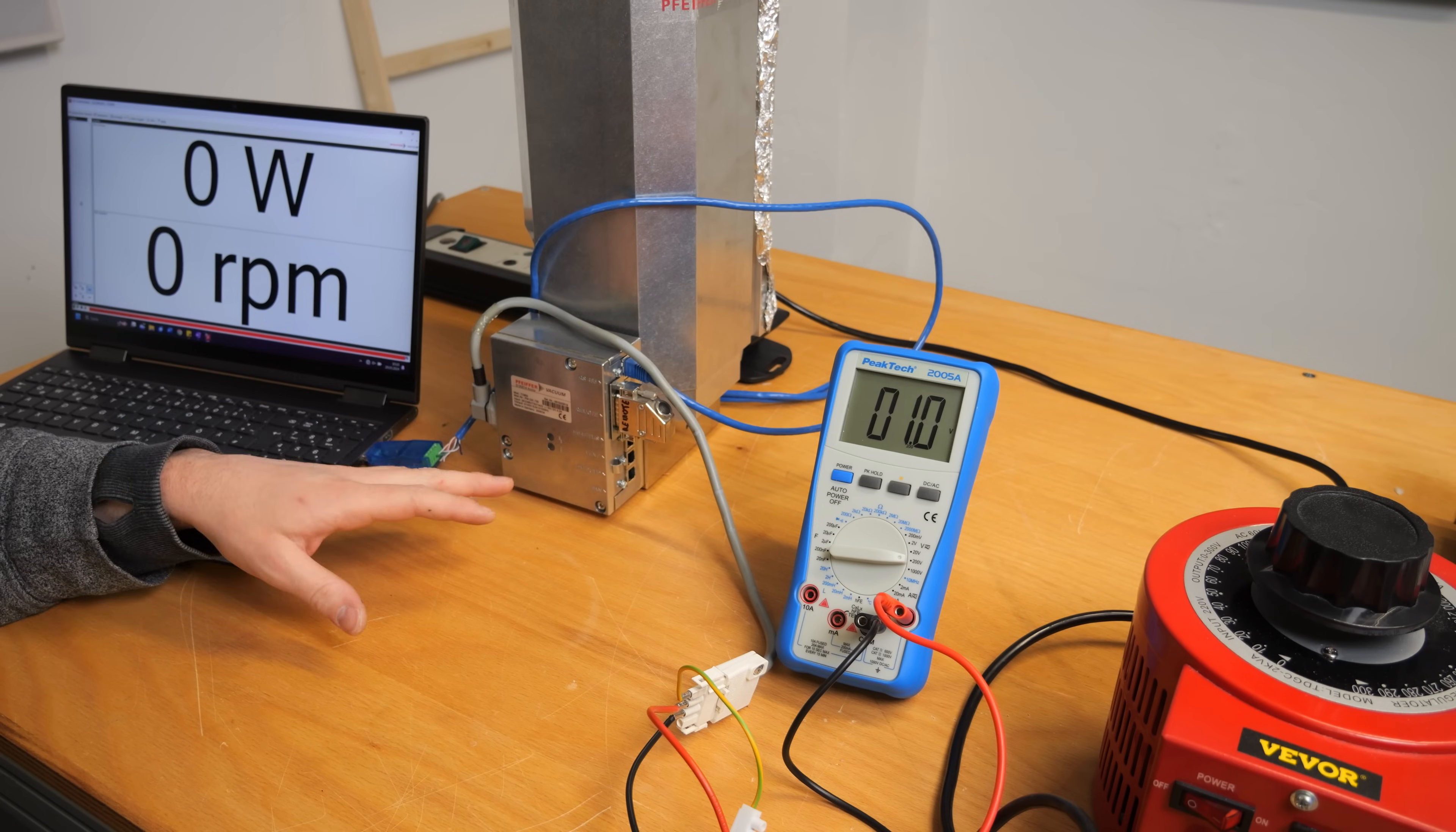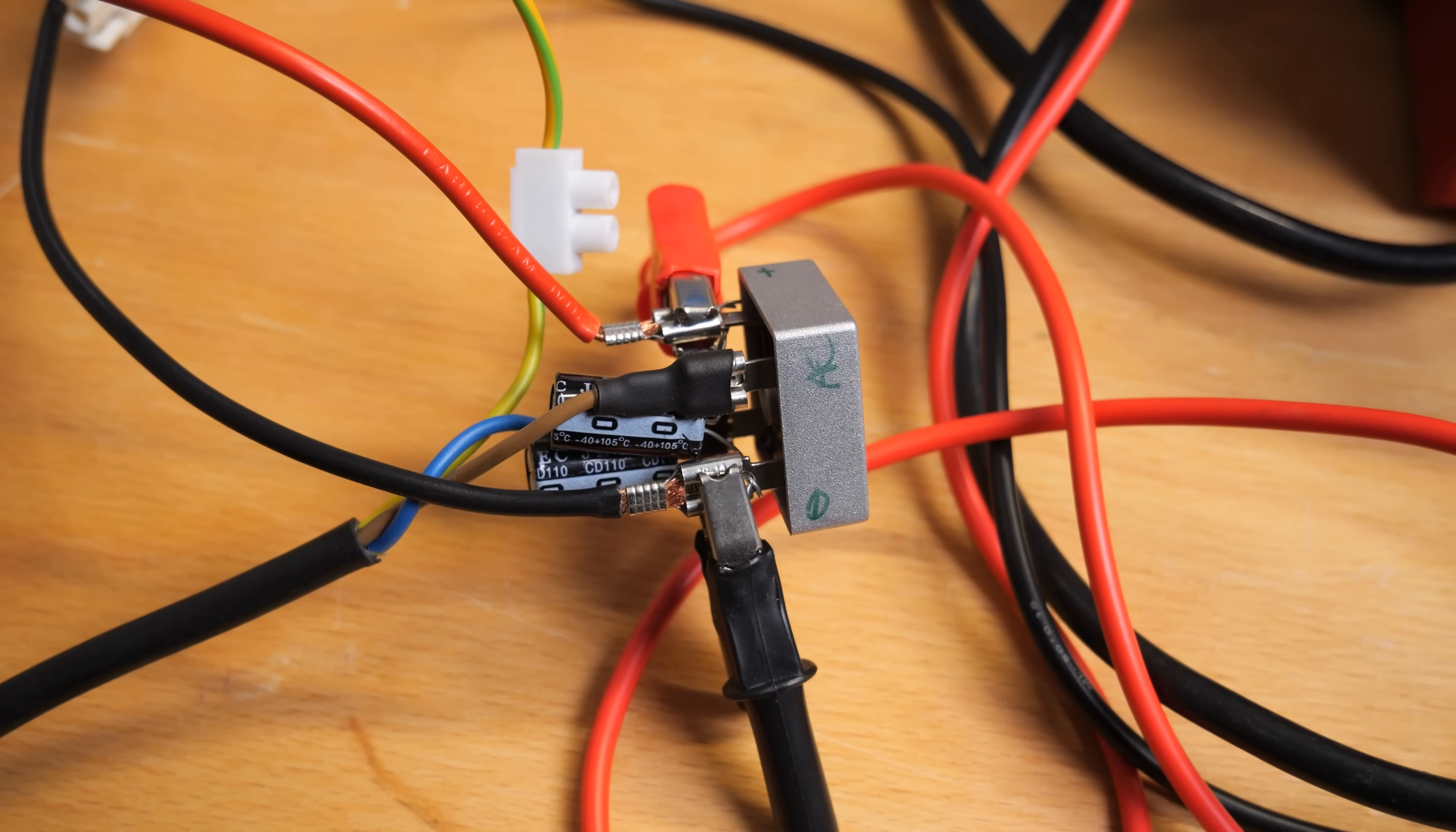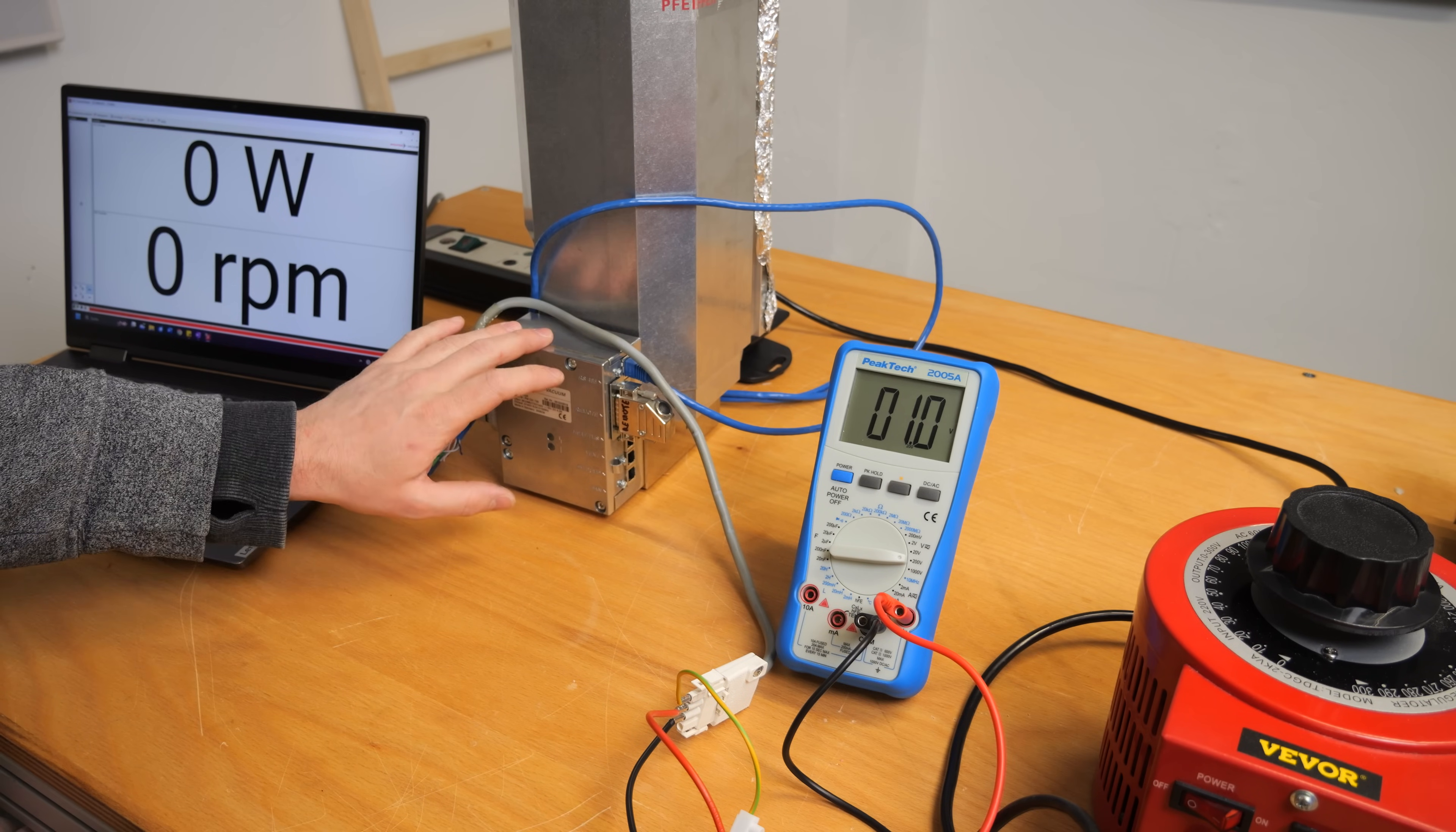Since my only 48 volt power supply is defective and my benchtop power supply only goes to 40 volts, I have decided to connect a full bridge rectifier with two capacitors to smooth out the voltage to a variac and I can just adjust the voltage to see if there is a voltage the controller will accept.